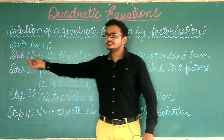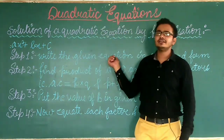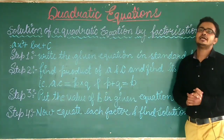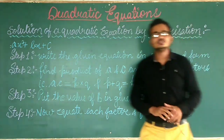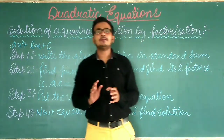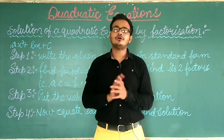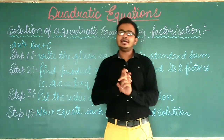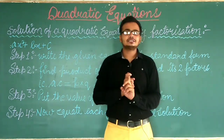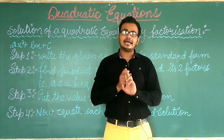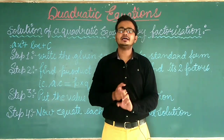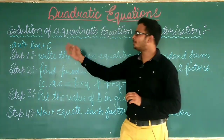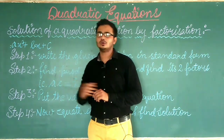The first step is: write the given equation in standard form. Whatever equation is given, you first have to write it in standard form — meaning first your X square term, then the X term, and last the constant — in proper sequence.